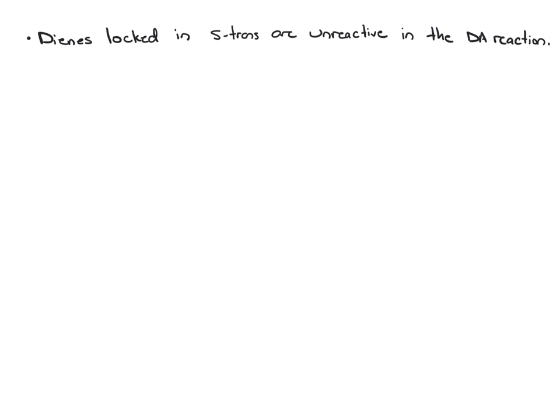Some dienes are locked in the S-trans conformation, making them unreactive in the Diels-Alder reaction. This means they can't rotate to get into the S-cis conformation. The most common place where we see this is in rings, where you have a diene with one double bond inside the ring and one double bond outside of the ring. Here's the single bond that connects these two, but because the ring has everything tied up, there's no free rotation around this bond. For that reason, this diene is locked in S-trans and it's unreactive in the Diels-Alder reaction.